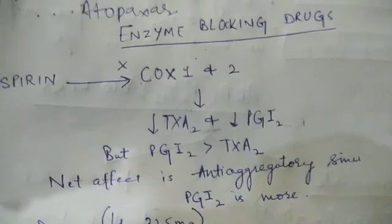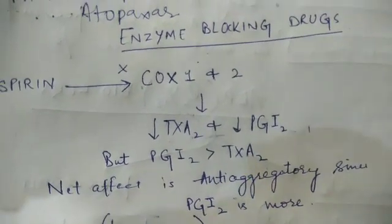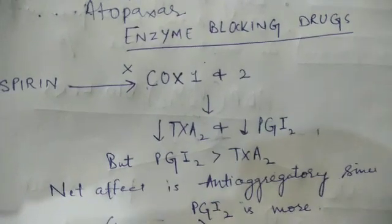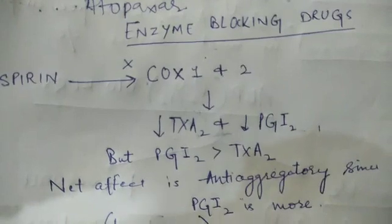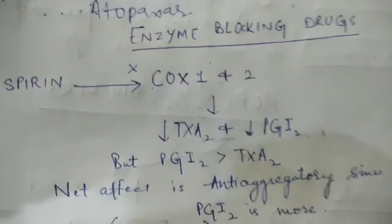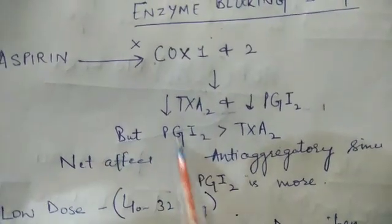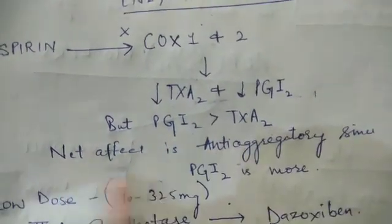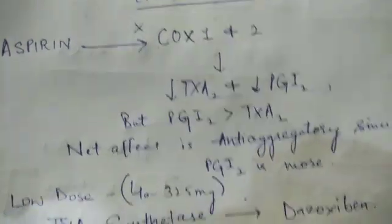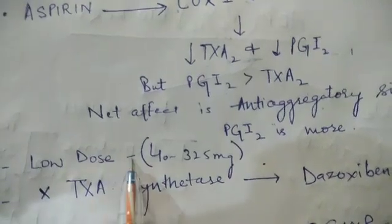But thromboxane level does not increase because it is produced by the platelets and platelets don't have nucleus, so fresh platelets have to be generated to produce the thromboxane. Because of this, there is less level of thromboxane, and we know PGI2 is an antiplatelet aggregator, so the net effect is anti-aggregated or antiplatelet action.